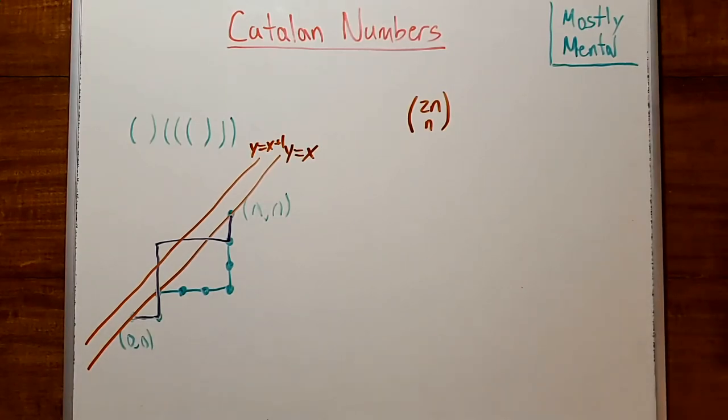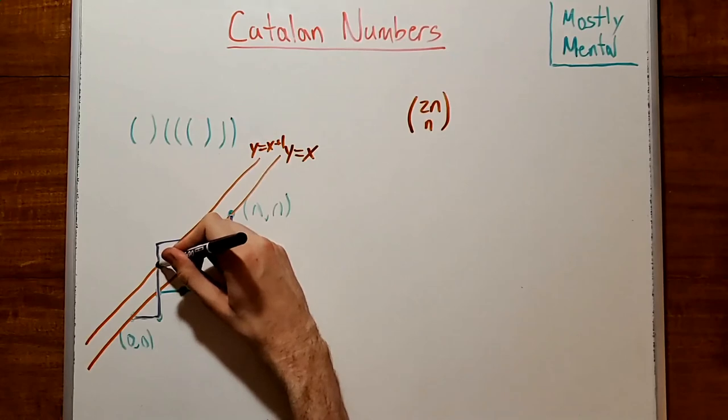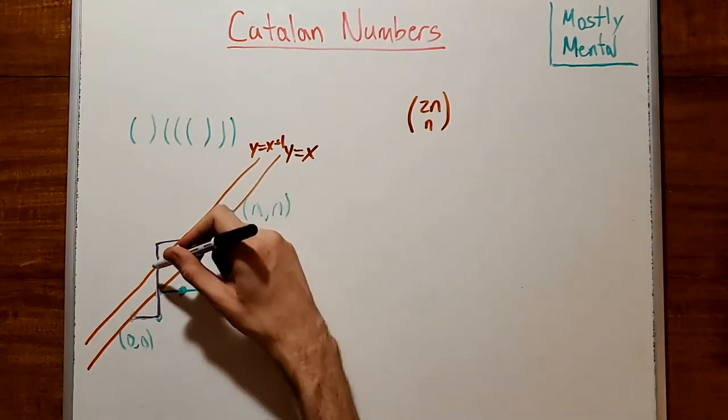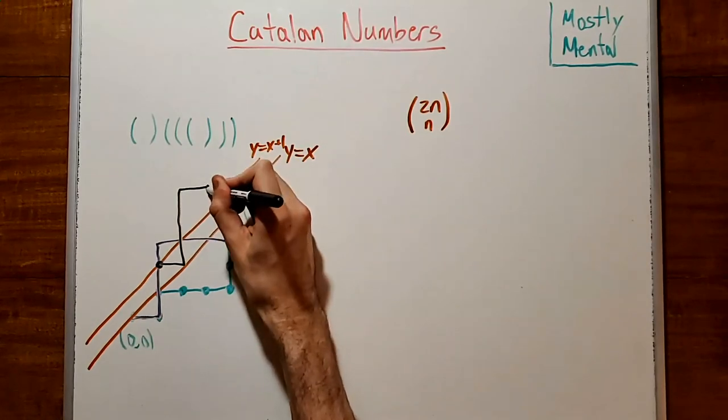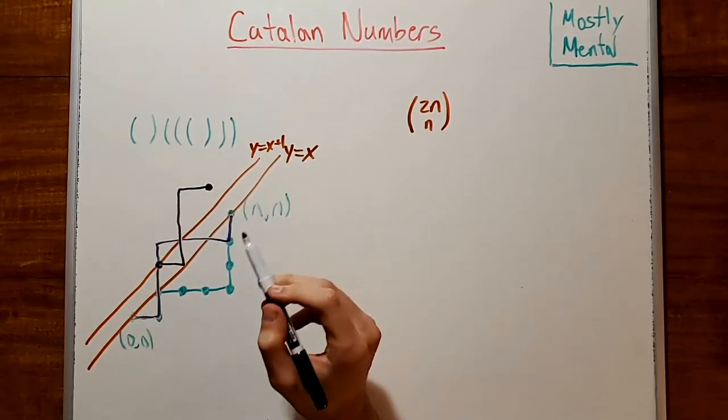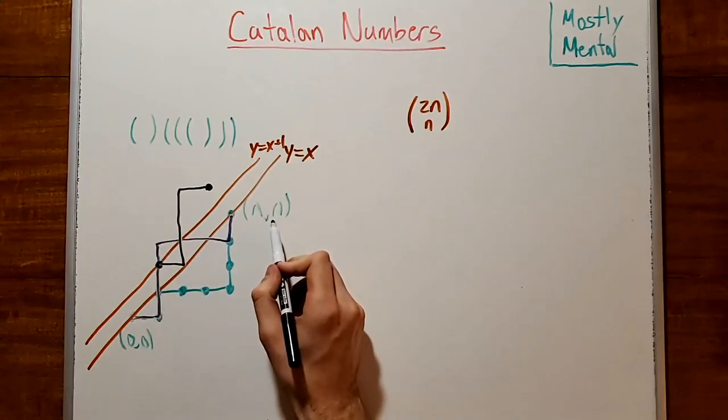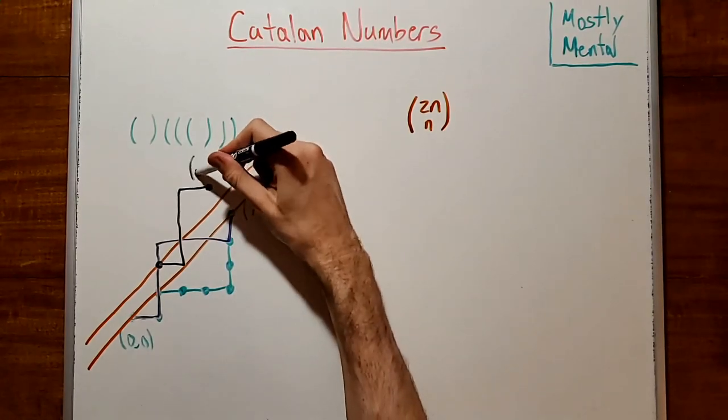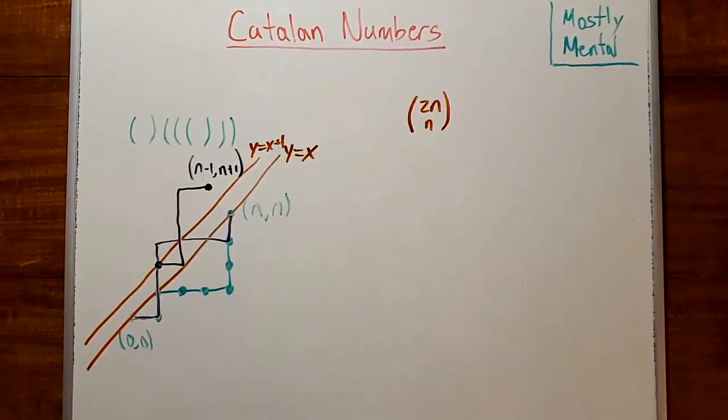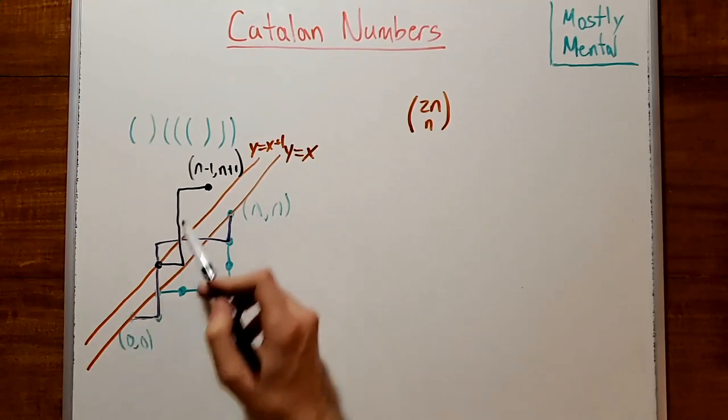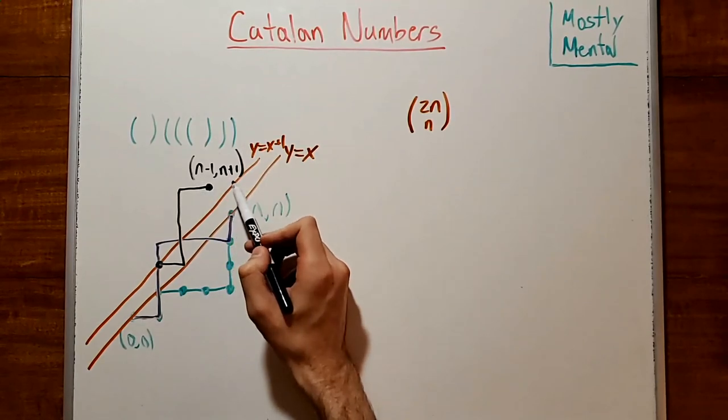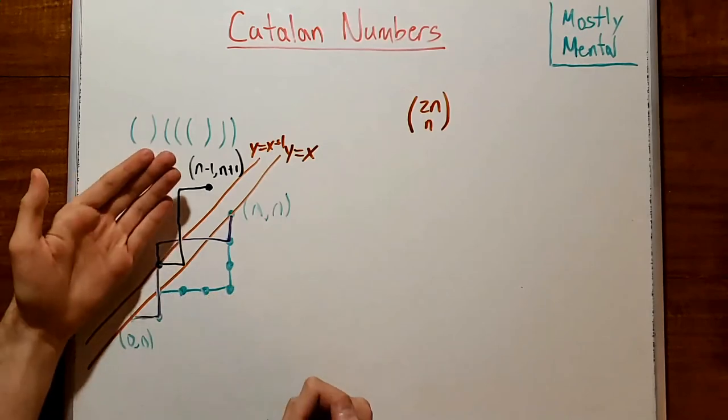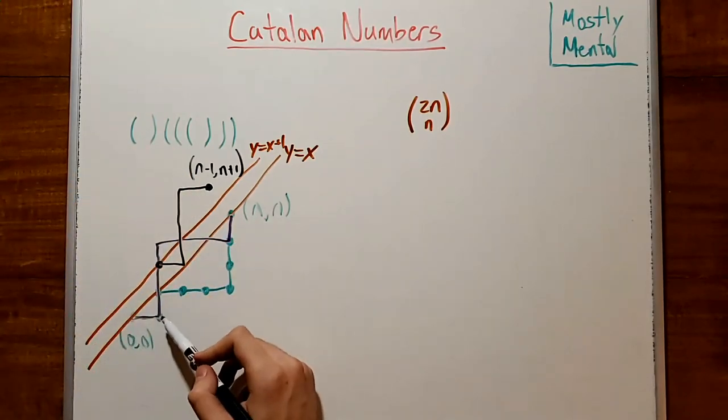So let's take each such path and reflect it across the line starting at its first intersection point here. So this purple path here gets reflected into this path here. And since the original path ended at n, n, when we reflect it across the line it's going to end at the reflected point there, n minus 1, n plus 1. And notice that we can undo this process. If we've got a path starting at the origin and ending at n minus 1, n plus 1, we can go back to its first intersection and reflect again to get back a path that goes to n, n.